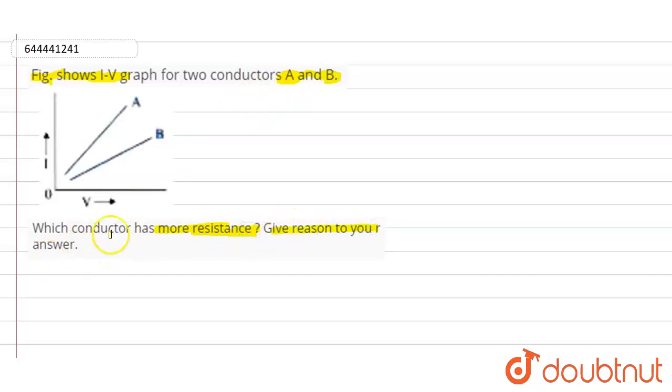Here we need to state which of these two conductors has more resistance value. In order to find out the value of the resistance, according to Ohm's law, we know R equals V divided by I. If you look into this figure, this graph is drawn between I versus V, and A and B are the two conductors.